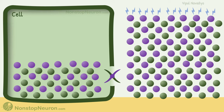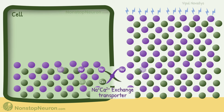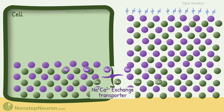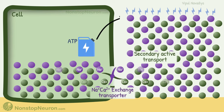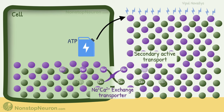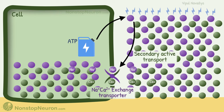All we need is a transporter that couples the movement of sodium with the movement of calcium. One such transporter is the sodium-calcium exchange transporter. Movement of sodium down its electrochemical gradient energizes this transporter, and that energy secondarily moves calcium against its electrochemical gradient. Thus, this transport of calcium is secondary active transport because energy from ATP was first stored in the form of a concentration gradient of sodium, and that energy is secondarily used to move calcium.